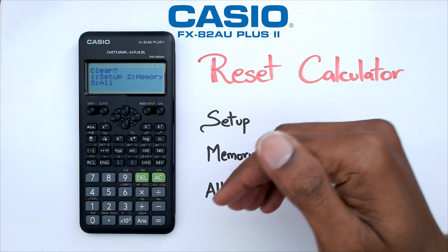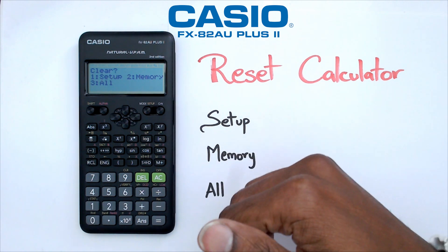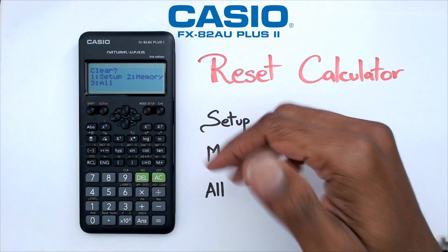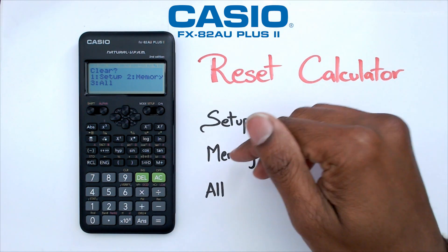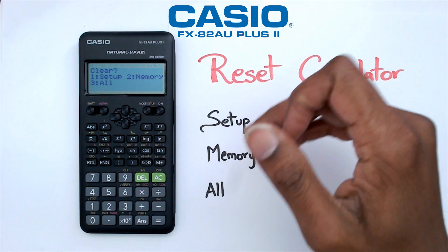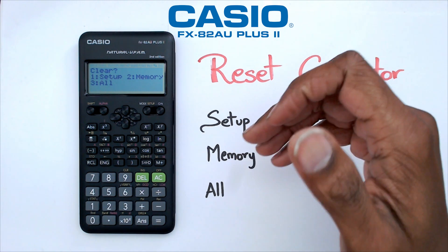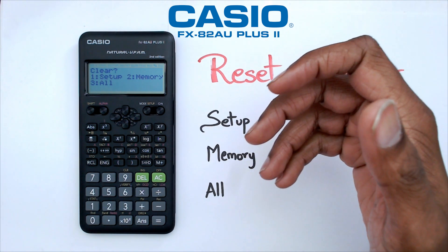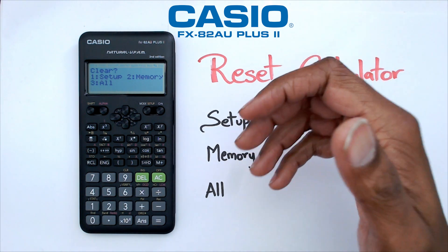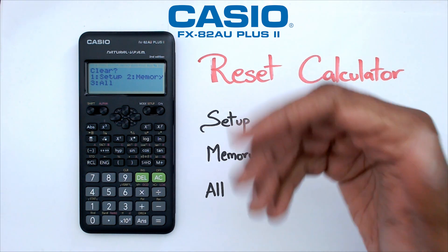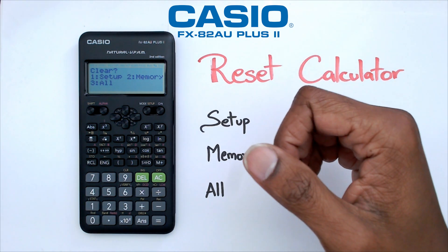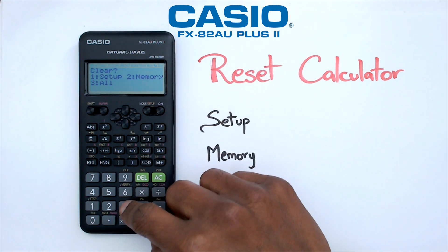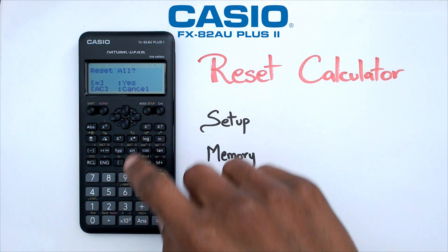If you click on All, that wipes the calculator completely. Memory gets rid of only stored values, and Setup resets things like your angle mode — for example, degrees or radians — back to default. In this case I want to clear all, so I'm going to click on 3.